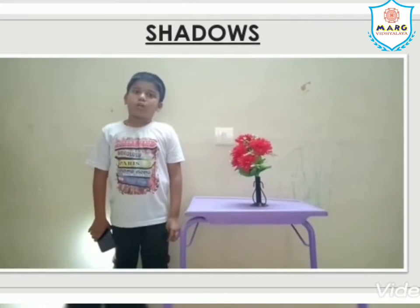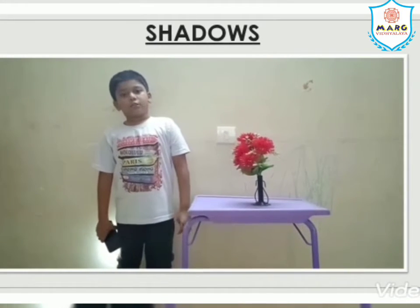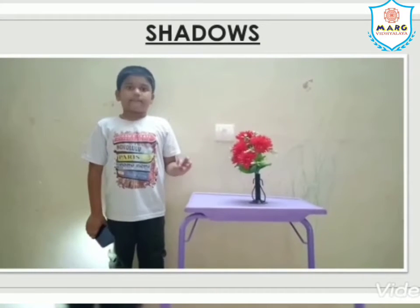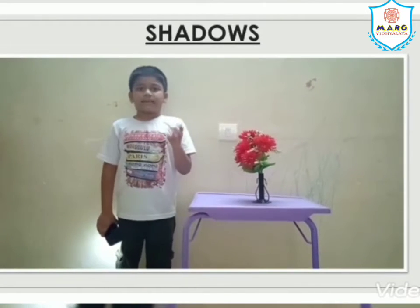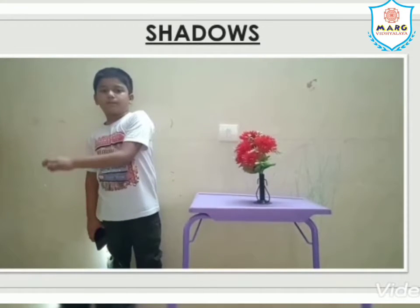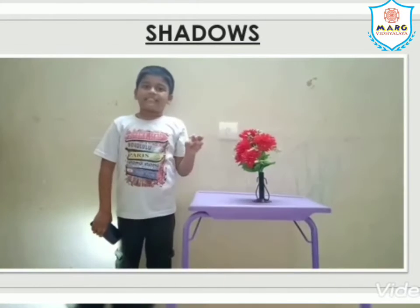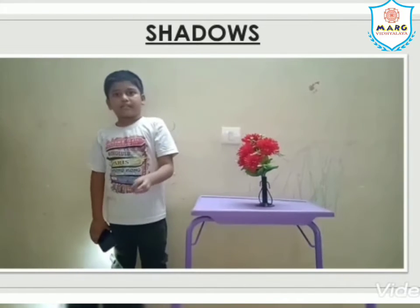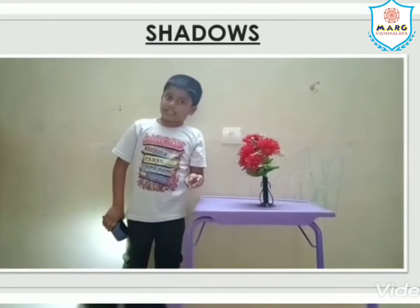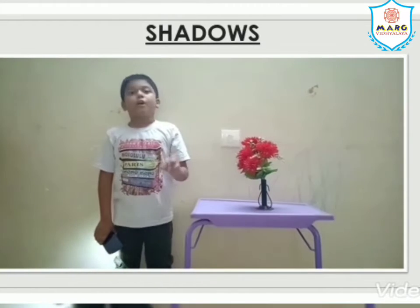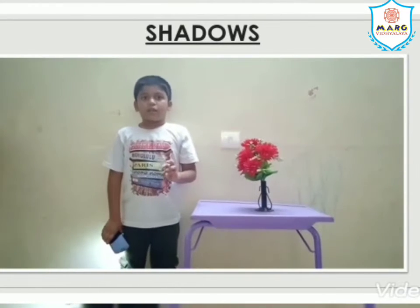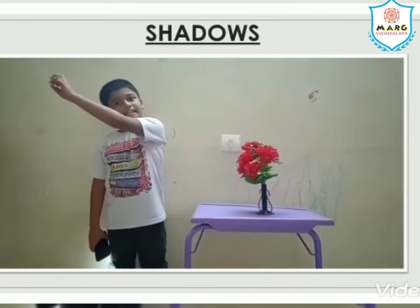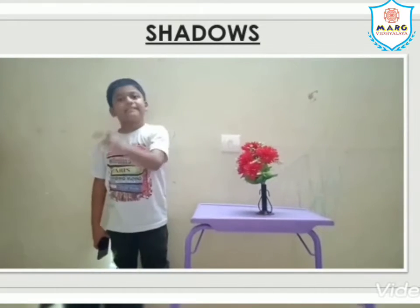So now let us see what is shadow. Shadow is a dark maze formed when light is not able to pass through an object. Shadows are not the same — it depends on the object that is blocking the light. Shadow can only be formed by an opaque object, not by transparent objects, because light can pass through transparent glass easily.